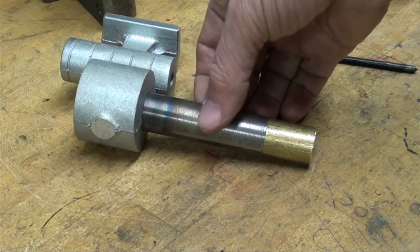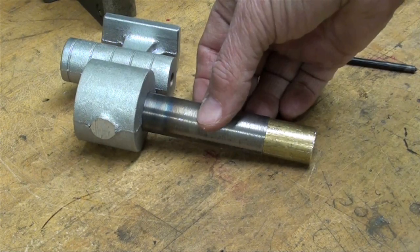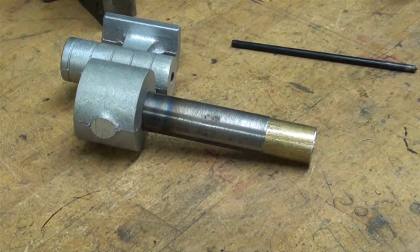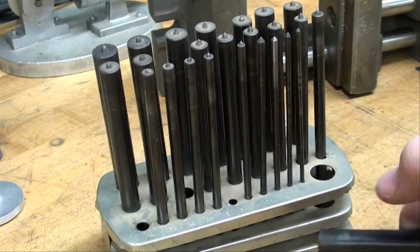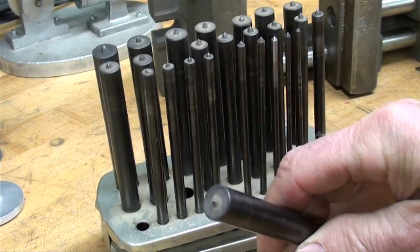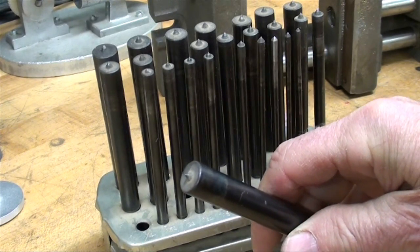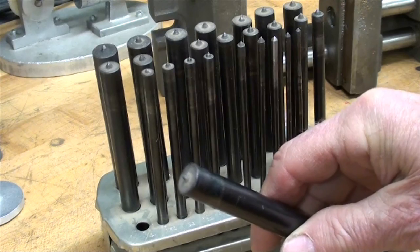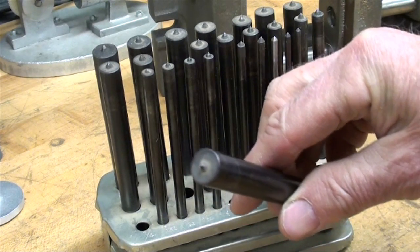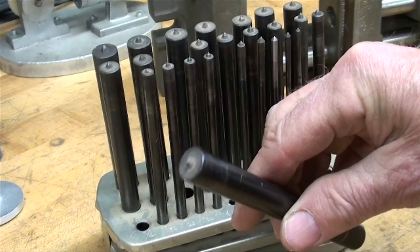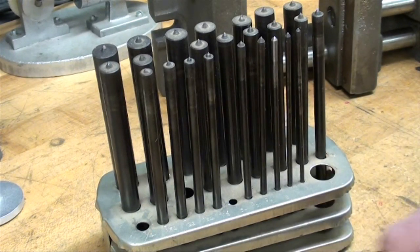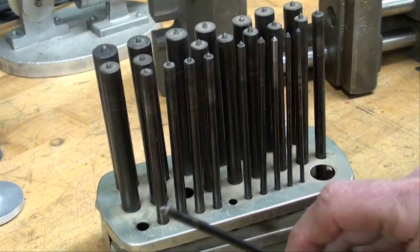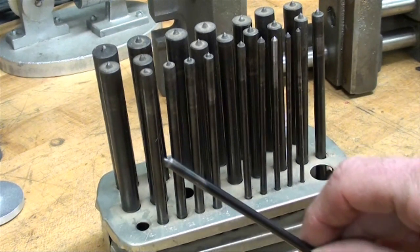This is a set of transfer punches. If you don't have any of these, make sure you get yourself a set. They come in fractional sizes or number sizes. This is the fractional size set, and each one has a little point on the end. You just strike it with a hammer once you put it through the hole and align your work. I'll be using the smaller one, which is 11/64.